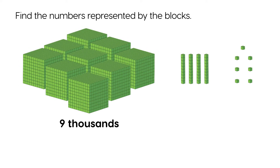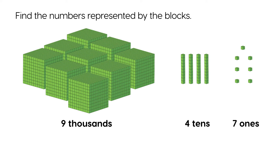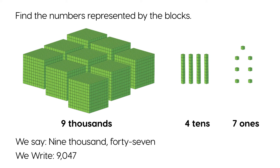Nine thousands, four tens, seven ones. We say nine thousand forty-seven. We write nine thousand forty-seven.